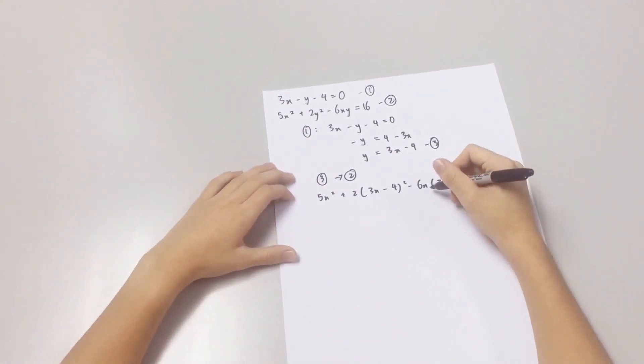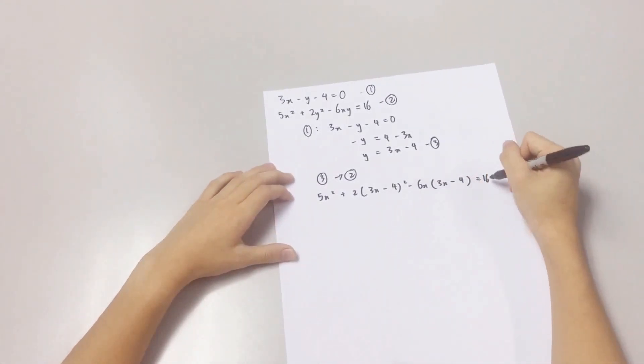Now, you expand the bracket and subsequently bring the 16 to the left.